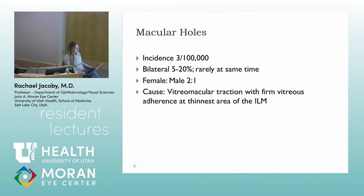Macular holes are fairly rare — about 3 per 100,000 — but we see them frequently enough. They can be bilateral but don't often occur at the same time; you can see them spread out over years or months. There's a higher female-to-male ratio that's never been well defined. The cause is abnormal vitreo-macular traction with firm adherence at the thin area of the ILM right over the fovea.